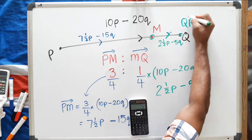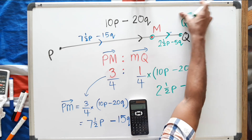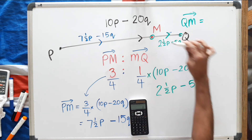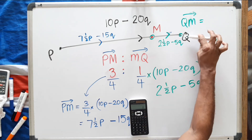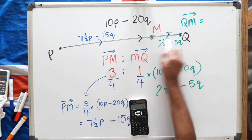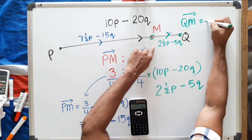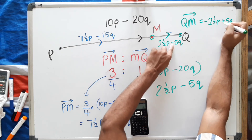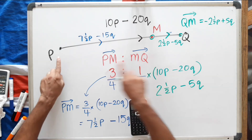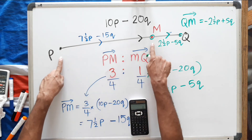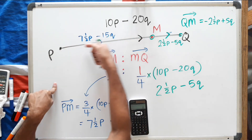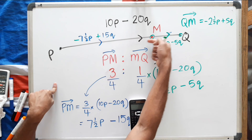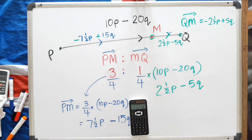If the examiner tries to trick you and asks for the vector QM instead of MQ, remember: MQ goes in one direction giving 2 and a half p minus 5q, but QM is the opposite direction. As I showed in my first video on vectors, if you go against the arrow you just make all the signs the opposite — so QM is negative 2 and a half p plus 5q. Similarly, if they ask for MP instead of PM, just reverse the signs of PM.